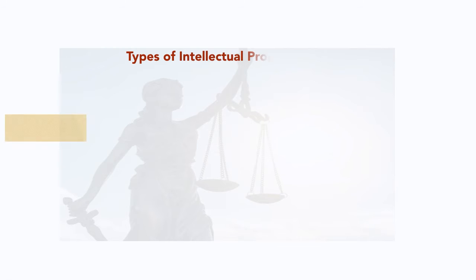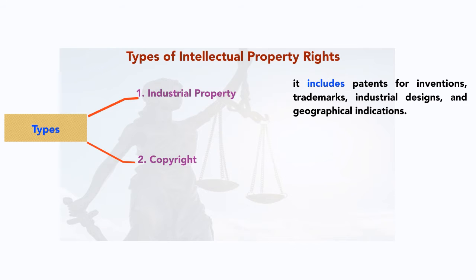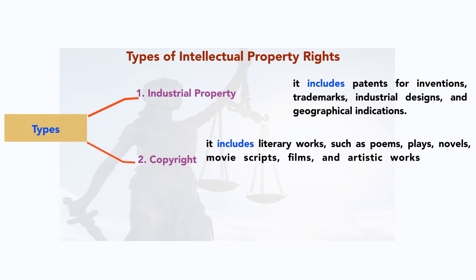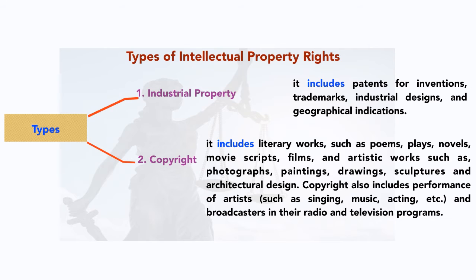Now let's discuss the types of intellectual property rights. Primarily, intellectual property rights are categorized as industrial property and copyright. Industrial property includes patents for innovations, trademarks, industrial designs, and geographical indications. Copyright includes literary works such as poems, plays, novels, movie scripts, and films, and artistic works such as photographs, paintings, drawings, sculptures, and architectural design. Copyright also includes performances of artists such as singing, music, and acting, and broadcasters in their radio and television programs.